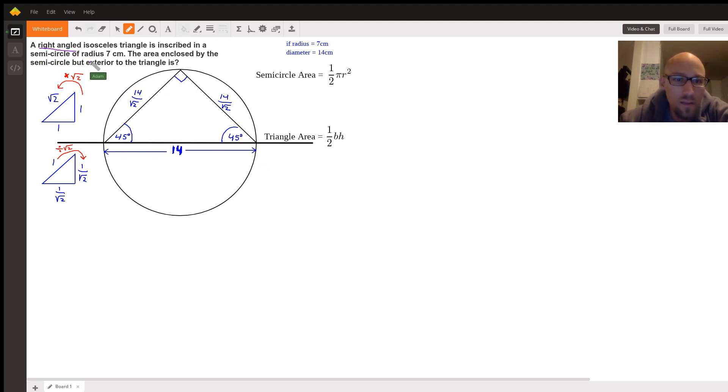Anyway, 45-45-90, we know special triangles: 1, 1, √2. To get from this side to the hypotenuse, we multiplied by √2. But if we have the hypotenuse and need to move backwards to a leg, we would divide by √2. Hence, the hypotenuse is 14, we'll do 14 over √2.